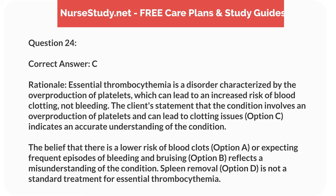Correct answer: C. Rationale: essential thrombocythemia is a disorder characterized by the overproduction of platelets, which can lead to an increased risk of blood clotting, not bleeding. The client's statement that the condition involves an overproduction of platelets and can lead to clotting issues, option C, indicates an accurate understanding of the condition. The belief that there is a lower risk of blood clots, option A, or expecting frequent episodes of bleeding and bruising, option B, reflects a misunderstanding of the condition. Spleen removal, option D, is not a standard treatment for essential thrombocythemia.